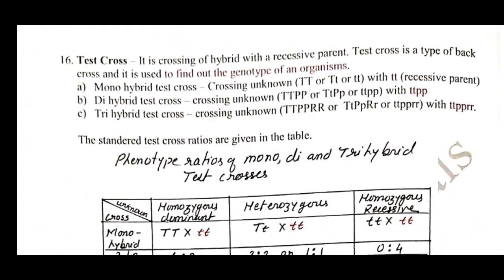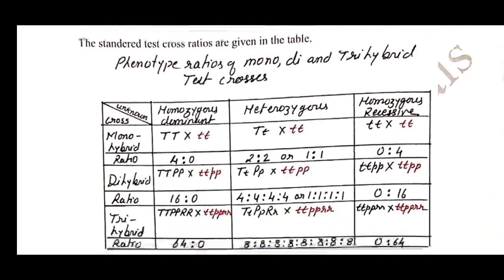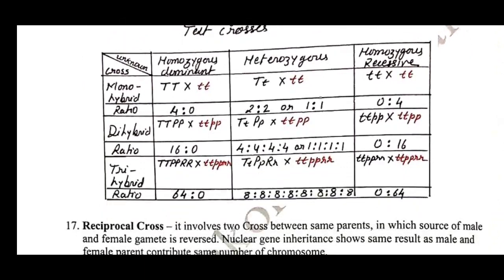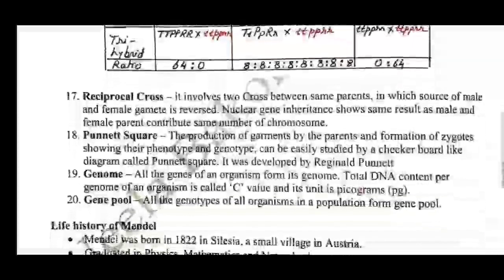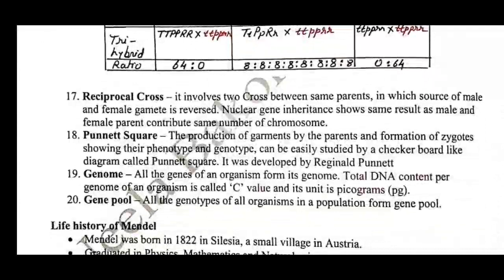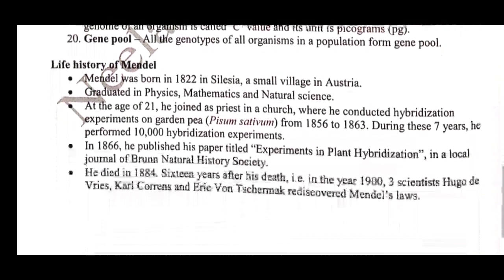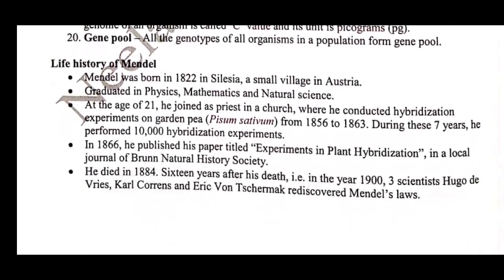The test cross is a very important topic in this chapter and ma'am has discussed it very clearly. Here is a handmade table of the test cross in the original writing of Dr. Neela Bakuri. After that the terms reciprocal cross, Punnett square, genome, and gene pool — all the terms used in this chapter — are very intelligently discussed at the start.